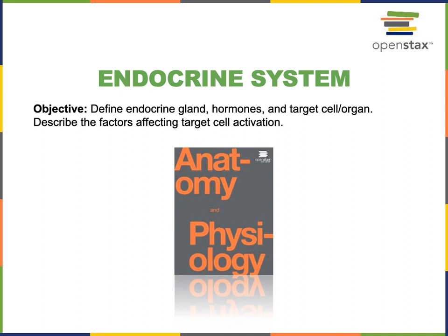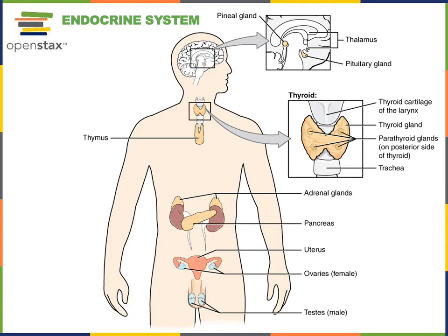This video will cover the following objective from the endocrine system: define endocrine gland, hormones, and target cell or target organ. Here we have a figure showing the major endocrine glands — the major organs that form the endocrine system.